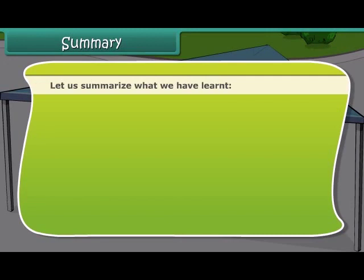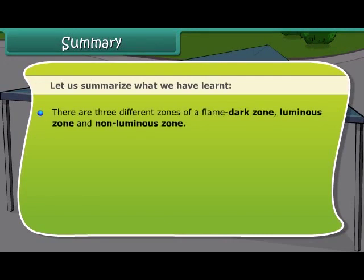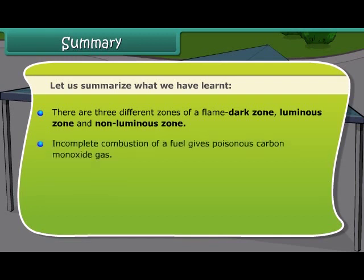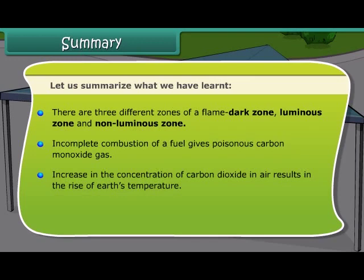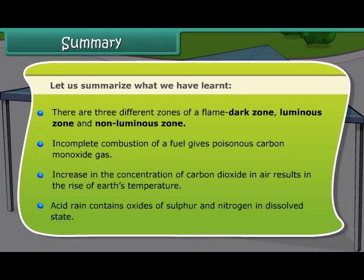Let us summarize what we have learned. There are three different zones of a flame: the dark zone, the luminous zone, and the non-luminous zone. Incomplete combustion of a fuel gives poisonous carbon monoxide gas. An increase in the concentration of carbon dioxide in air results in the rise of Earth's temperature. Acid rain contains oxides of sulfur and nitrogen in dissolved state.